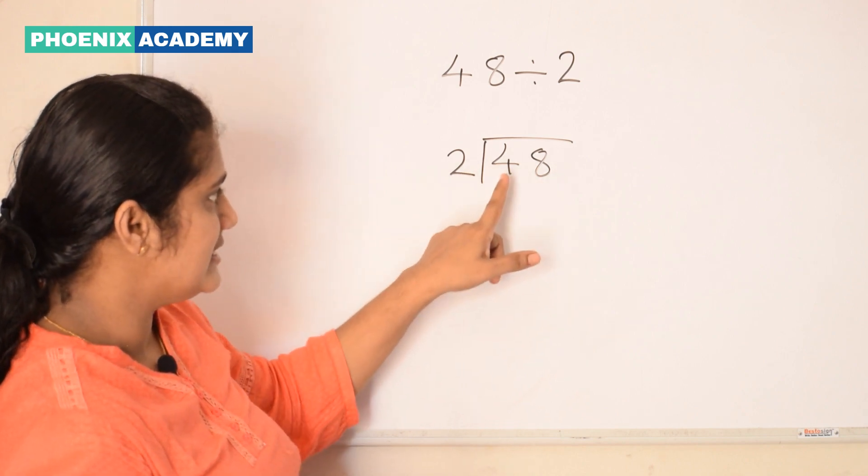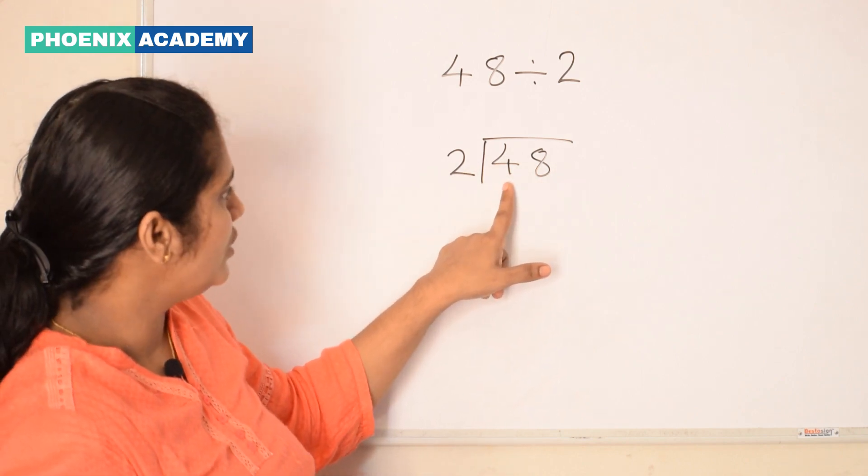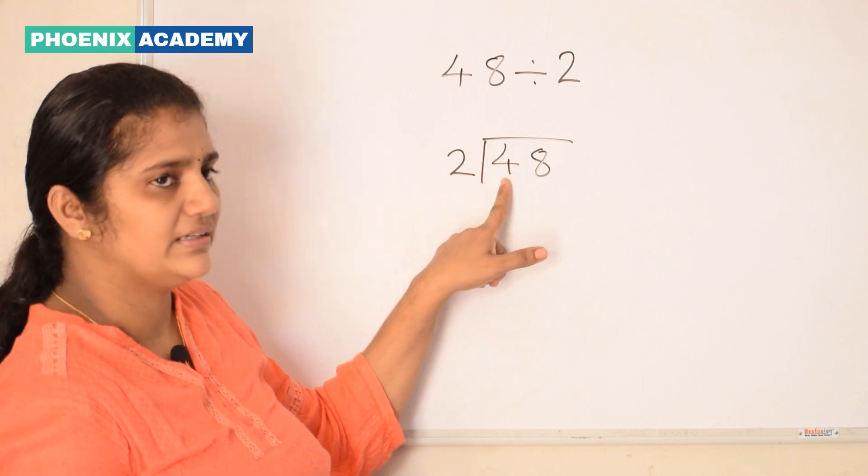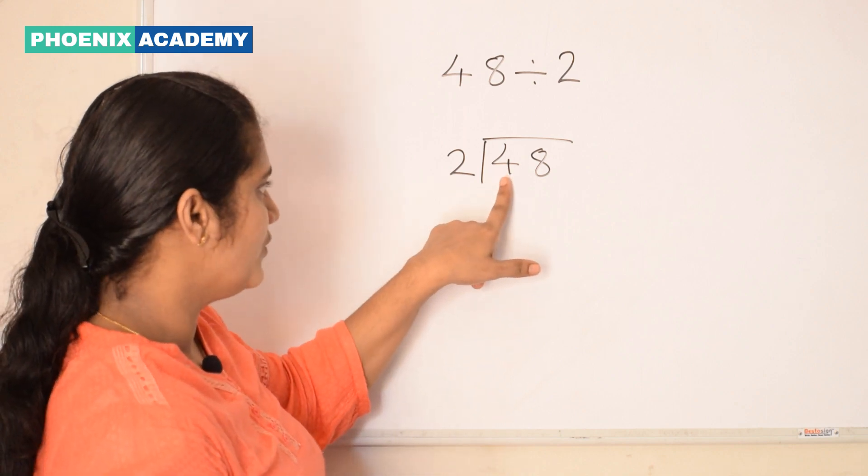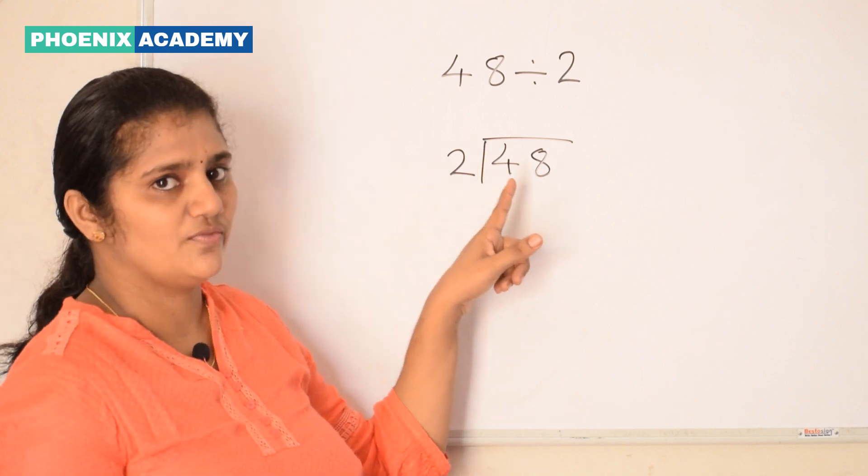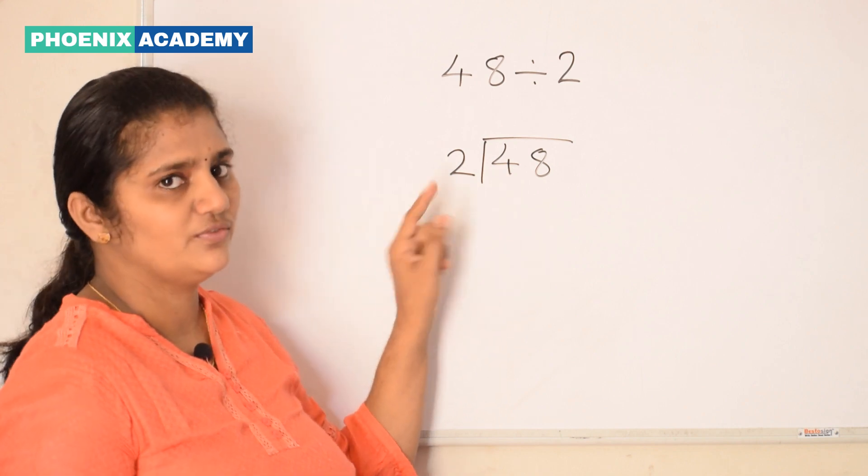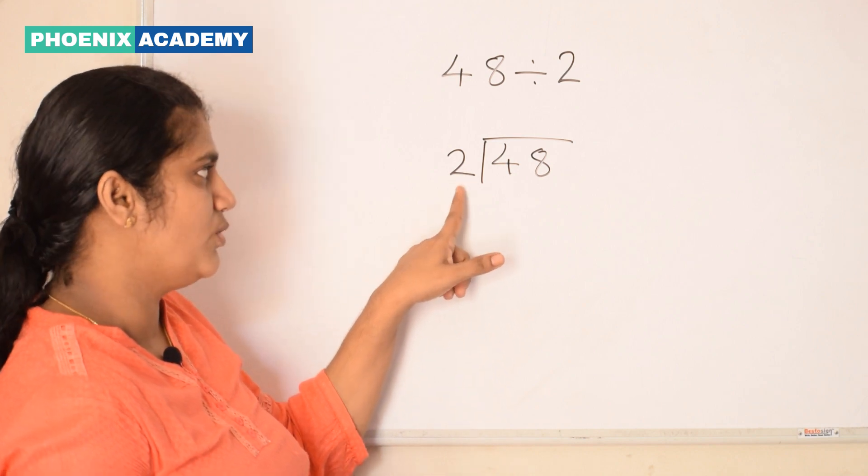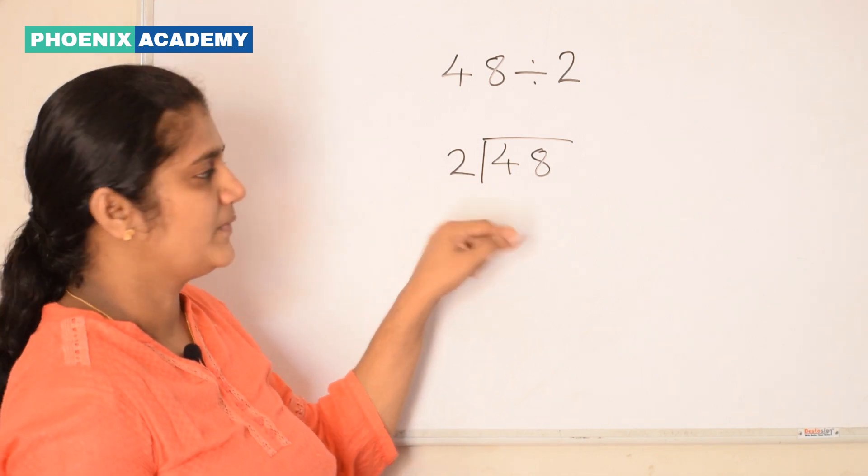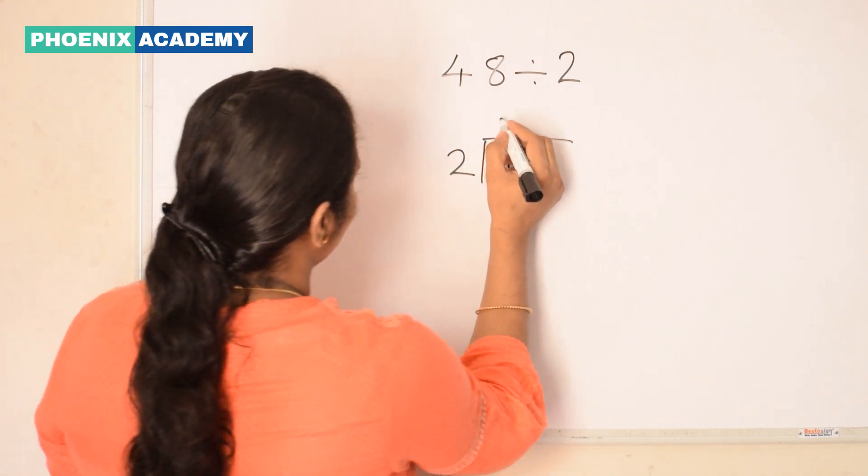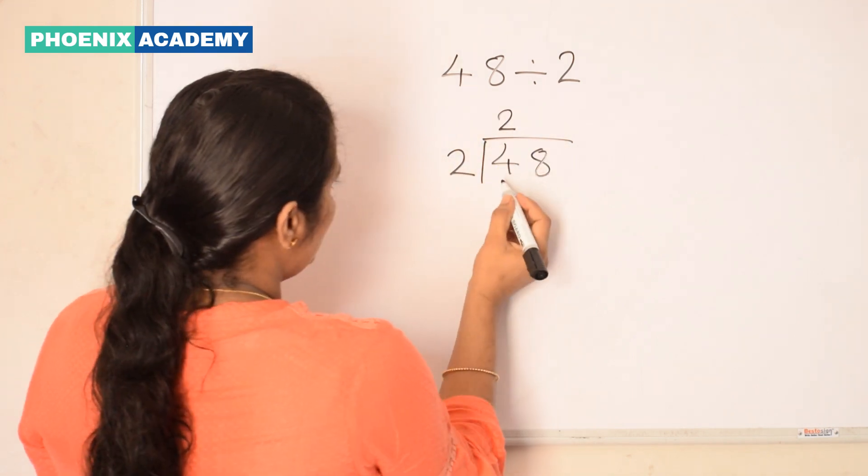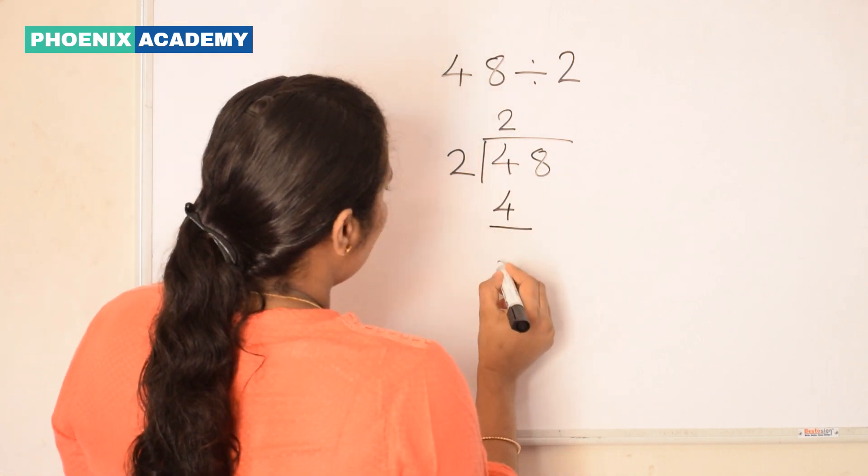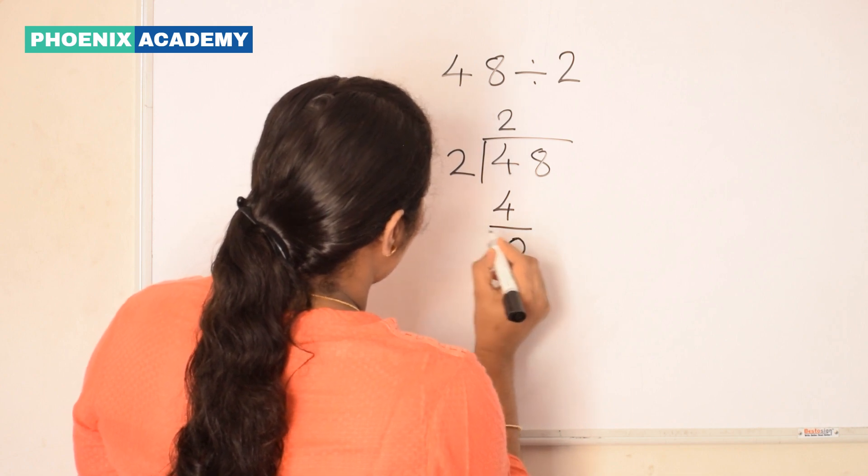Check if the digit in tens place is equal to or greater than the divisor, then divide the tens digit first. Here 4 is greater than 2, so we divide 4 by 2 first. 4 divided by 2. We say the table of 2 till we reach 4. So 2 twos are 4. We write 2 at quotient's place and write 4 below the dividend and subtract. We get 0.